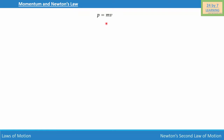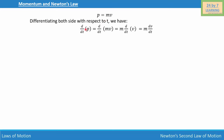As we know, linear momentum p is equal to mass times velocity. What I'm going to do is differentiate both sides with respect to t. And if I do that, I will write d/dt of p is equal to d/dt of mv.